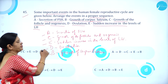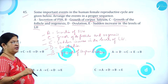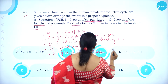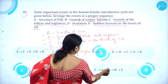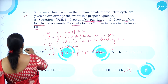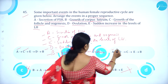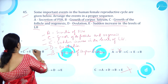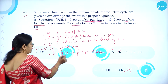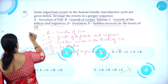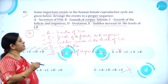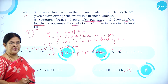Verifying against the options: the sequence A, C, E, D, B matches option A. Options with B or C first are eliminated. Checking further — option A gives A, C, E, D, B which is correct. So option A shows the correct events arranged in a proper sequence.